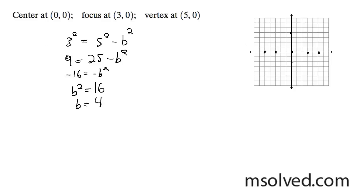So that means you're going to have 4 up here and 4 down here. And since we have this form, x squared over a squared plus y squared over b squared equals 1,